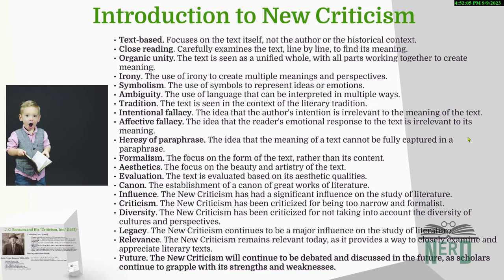If you're asking where this whole New Criticism thing got its name, thanks to J.C. Ransom and his 1941 book, The New Criticism — he's the one who really helped this movement take off. But before Ransom, there was I.A. Richards and his groundbreaking work, Practical Criticism, published in 1929. This book was a game changer because it came to use a scientific approach to literary interpretation. Richards is also often called the father of New Criticism. He was one of the first to treat literary analysis as a science, which was pretty revolutionary back then.